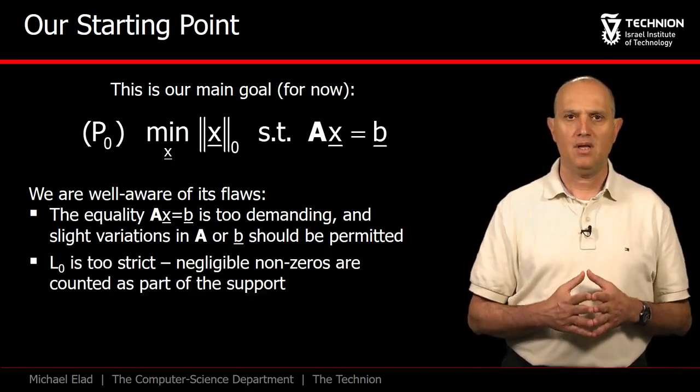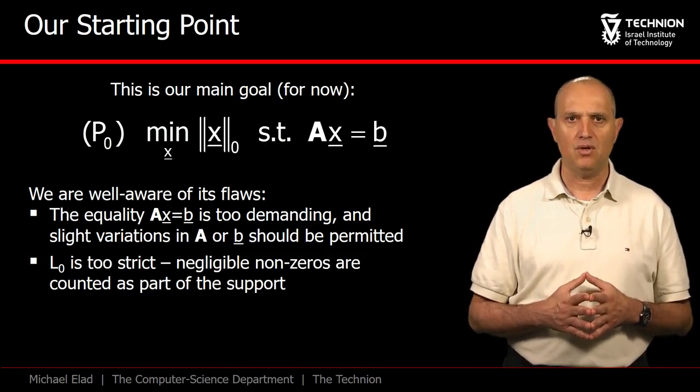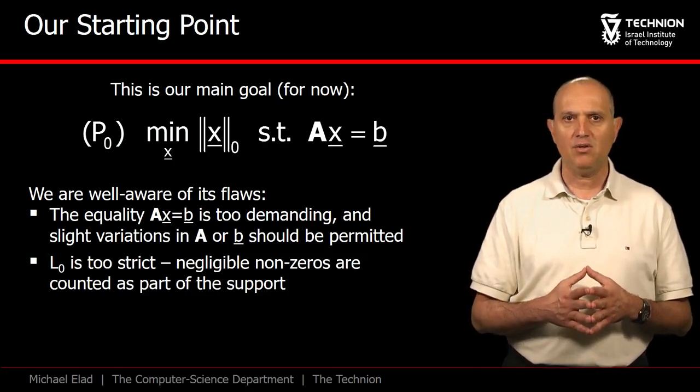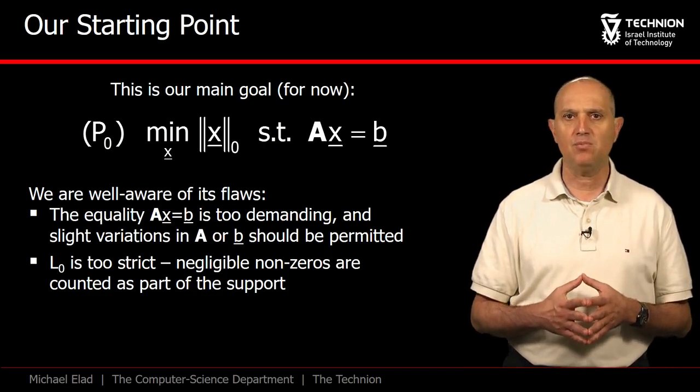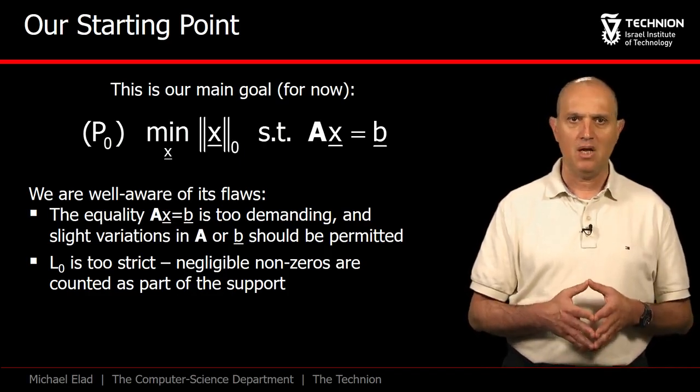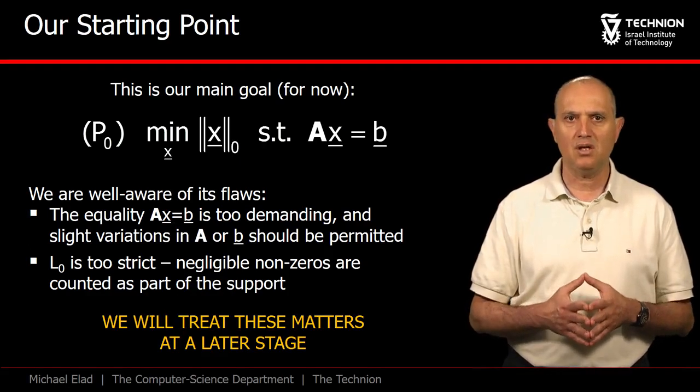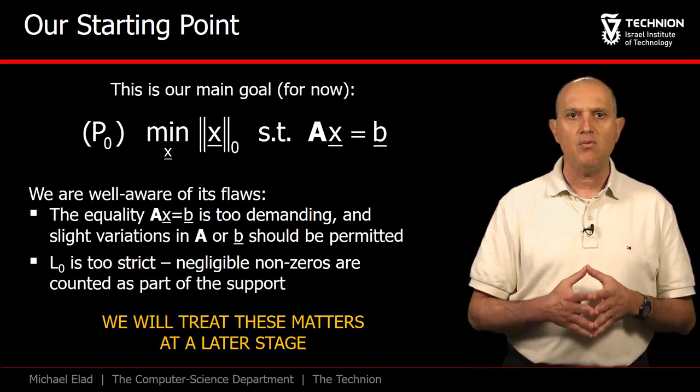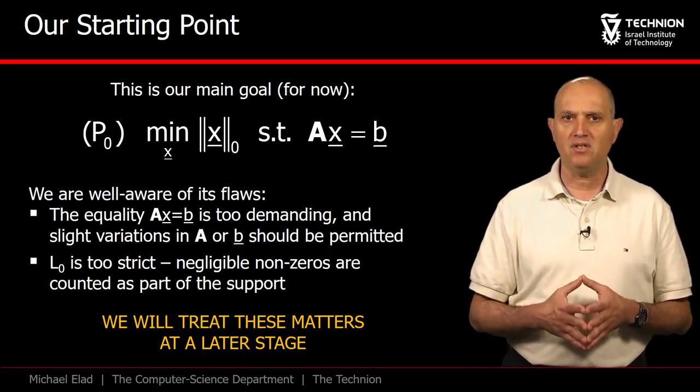Another flaw has to do with the L0 measure, also being too strict. A vector that is essentially sparse but has many very small entries will be considered by this measure as a dense one. Let's just decide to disregard these flaws for now. We will certainly come back and fix them later on.